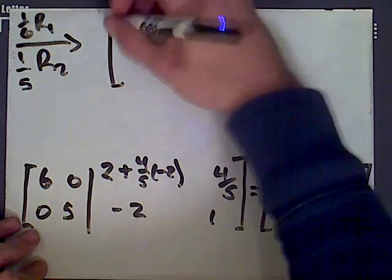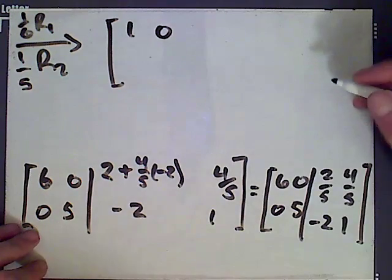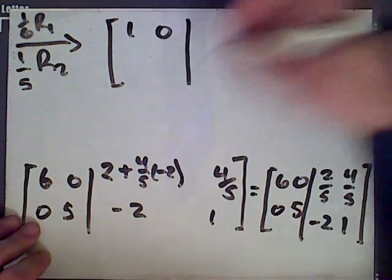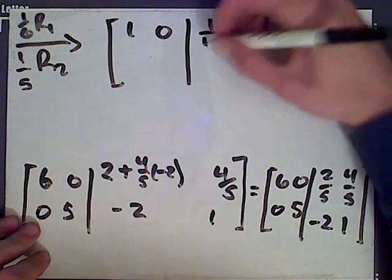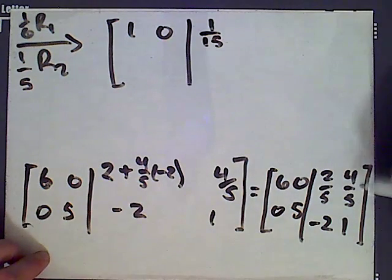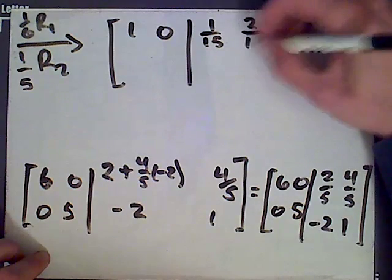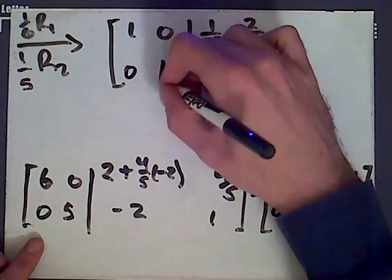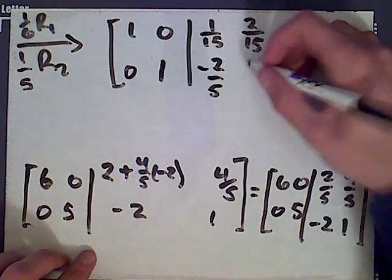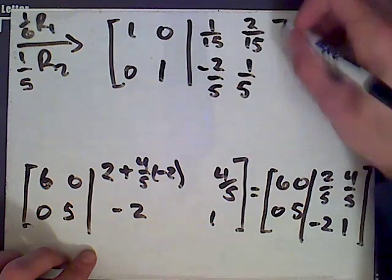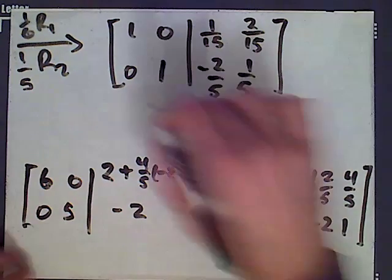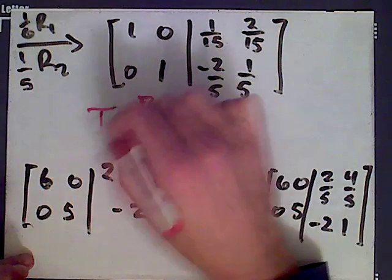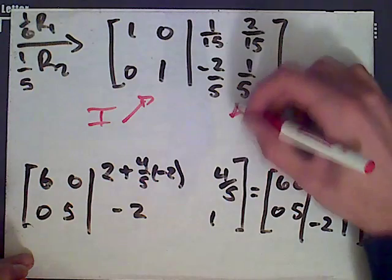Take row 1 and divide it by 6 and row 2 and divide it by 5. And what you end up getting is 1, 0. Divide this by 6 makes 1 over 15. And then divide this by 6. We get 2 over 15. And then we have 0, 1, negative 2 over 5, and 1 over 5. So we've reduced the left side to the identity. And I'm claiming the right side is A inverse.